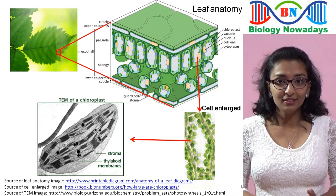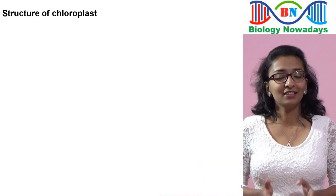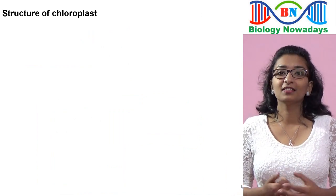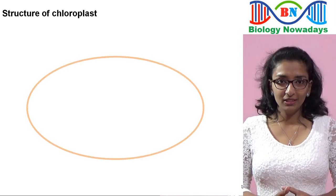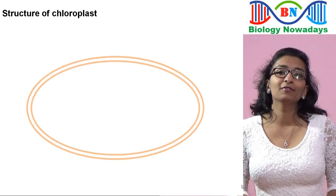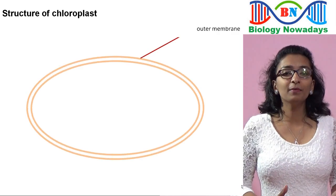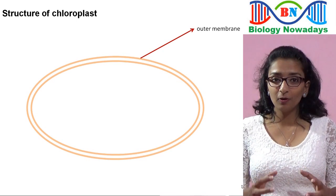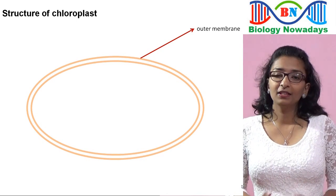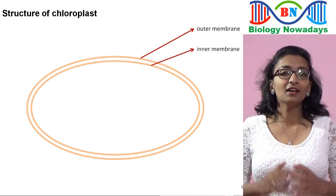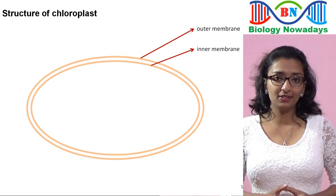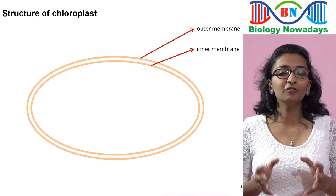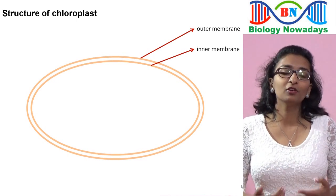Now let's learn about the structure of chloroplasts in detail. They are disc-shaped and surrounded by a double membrane called the chloroplast envelope. The outer membrane contains pores and is permeable to metabolites of small molecular weight, but the inner membrane of the chloroplast is highly specialized with transport proteins that regulate the movement of metabolites into and out of the chloroplast.